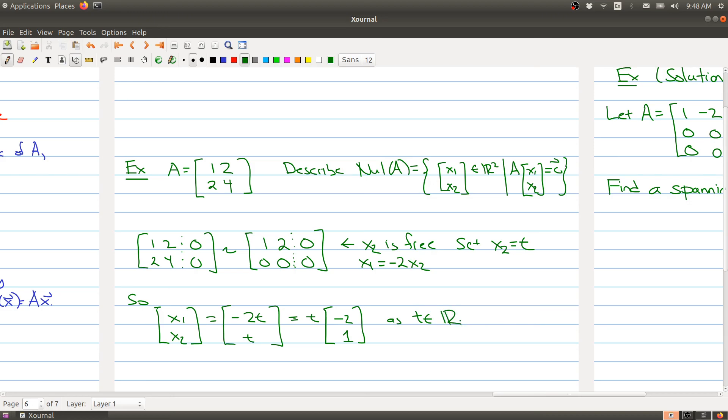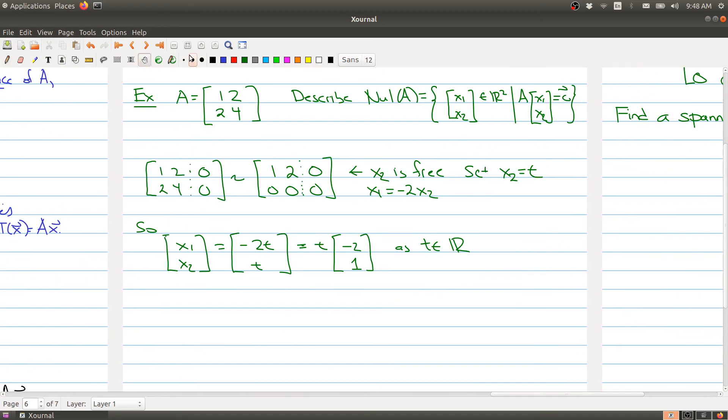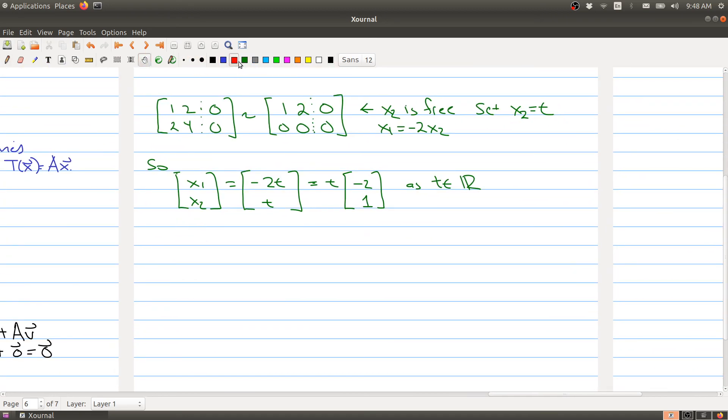So what we can say is the following. Then the null space of A, which is the set of all solutions x such that Ax = 0, is given by the set {t(-2, 1) as t runs through the real numbers}.